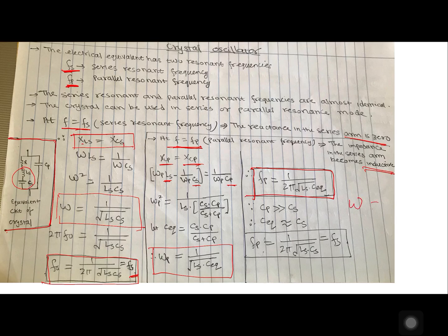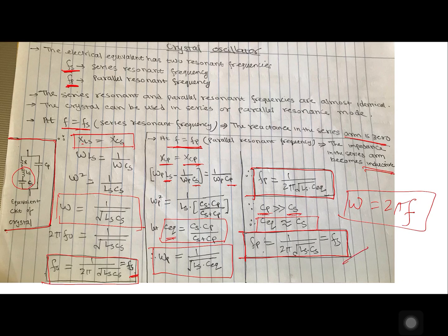Always remember omega is 2 pi into f. Now, here since two capacitors are there, you have replaced the resultant capacitor as C equivalent. This Cp is far greater than Cs. So you can equate C equivalent as Cs. When you do that, your series resonant frequency is almost equal to parallel resonant frequency.